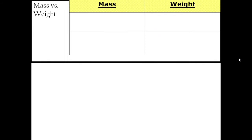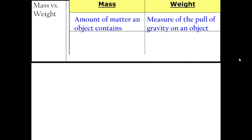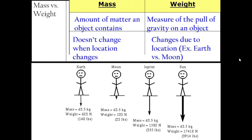Let's do a quick review of mass and weight. Mass is the amount of matter an object contains. Weight is the measure of the pull of gravity on that object. Therefore, mass will not change when our location changes — mass is always the same because we always have the same amount of matter. Weight, on the other hand, will change depending on where you're at — on Earth or on the Moon. Here's a picture showing how our mass is the same at all four locations, but our weight changes.